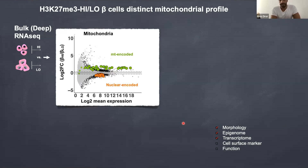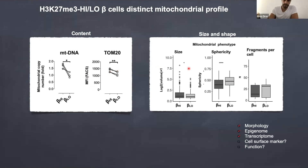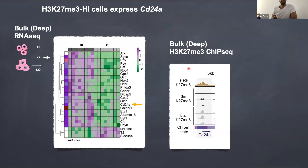So we have differences in morphology, epigenome, and transcription — and what about the cell surface marker? We wanted to know about surface markers and function. We also validated by mitochondrial content the results from the RNA. Mitochondrial content is higher in beta high cells — either by quantification of the DNA or of the mitochondrial protein TOM20 — and they also have a different size and shape. So there are indeed two unique cell types.